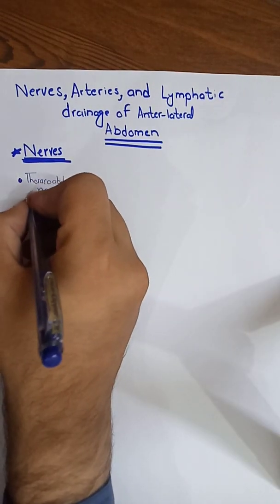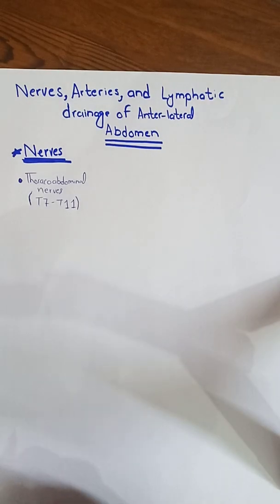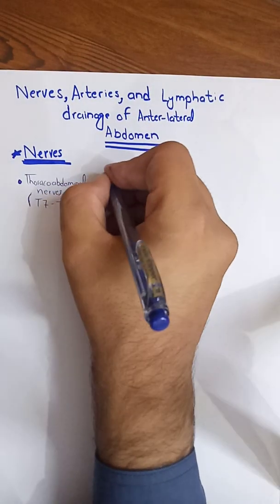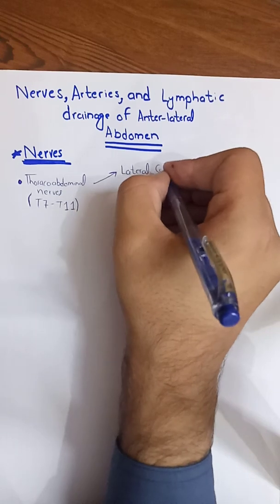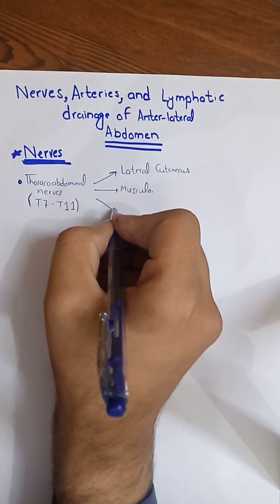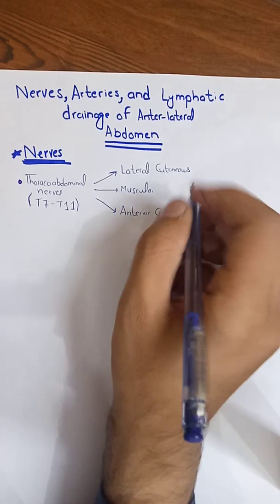The thoracoabdominal nerves arise from T7 to T11 vertebrae. These are the thoracic nerves that supply the thoracic cage, and after giving their lateral cutaneous branch they become the thoracoabdominal nerves as they move into the abdominal region. In the abdomen, each nerve gives three branches: a lateral cutaneous branch, muscular branches, and an anterior cutaneous branch.